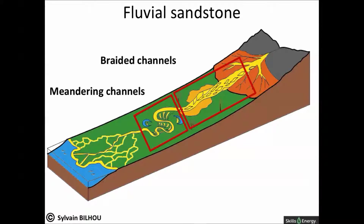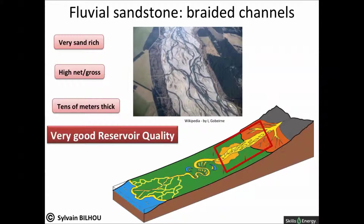We will discuss the geometry of these two categories. Braided rivers, as seen on the picture, are commonly very sand rich. As a consequence, the net-to-gross of petroleum reservoirs developed in such environments is commonly very high, usually between 0.7 and 1. Thicknesses are commonly in the range of many tens of meters. The reservoir quality tends to be very good.